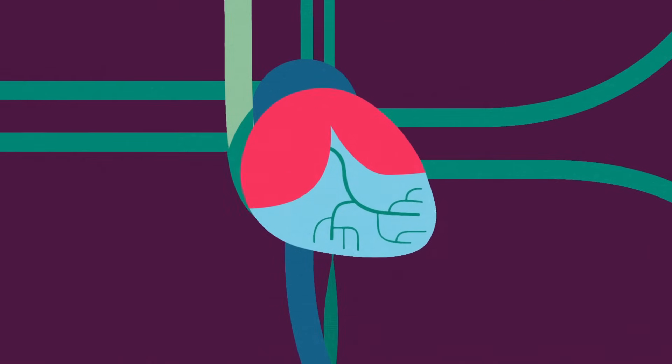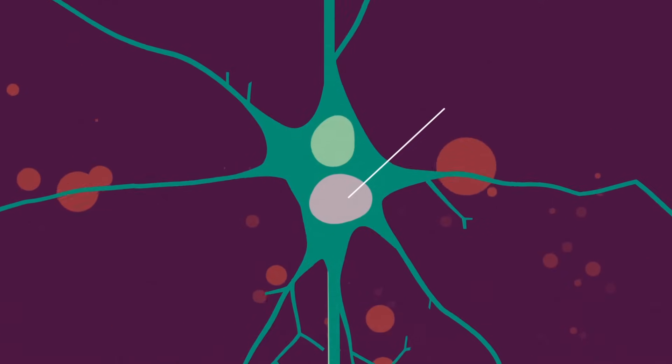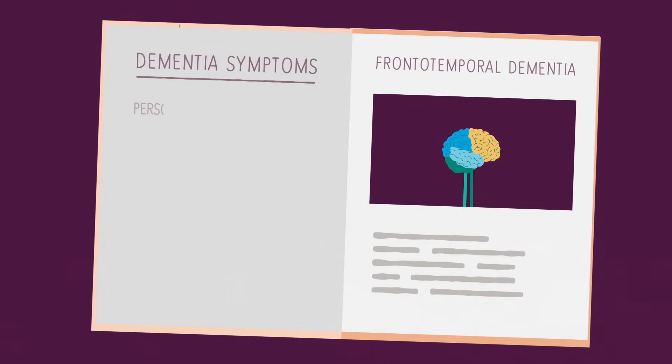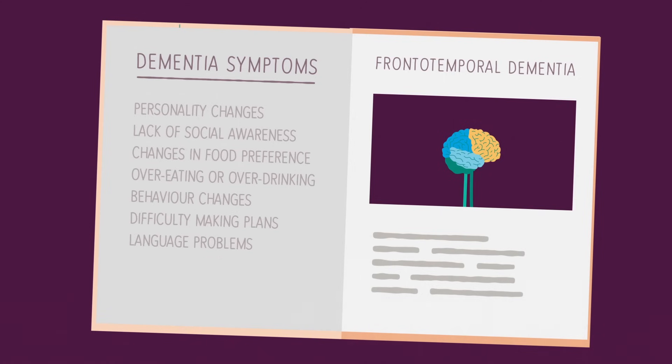The buildup of harmful proteins is also a key factor in other diseases behind the condition, like dementia with Lewy bodies and frontotemporal dementia. This damage spreads from one area of the brain to another as the condition progresses. So symptoms get worse over time and people begin to find more aspects of day-to-day life difficult.